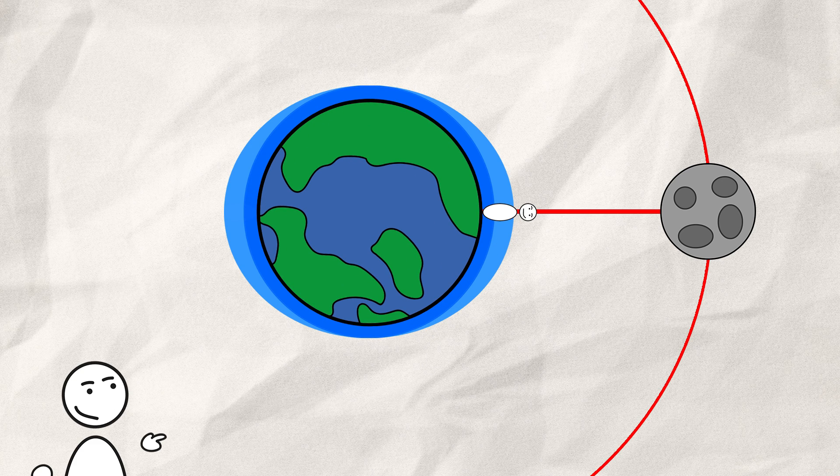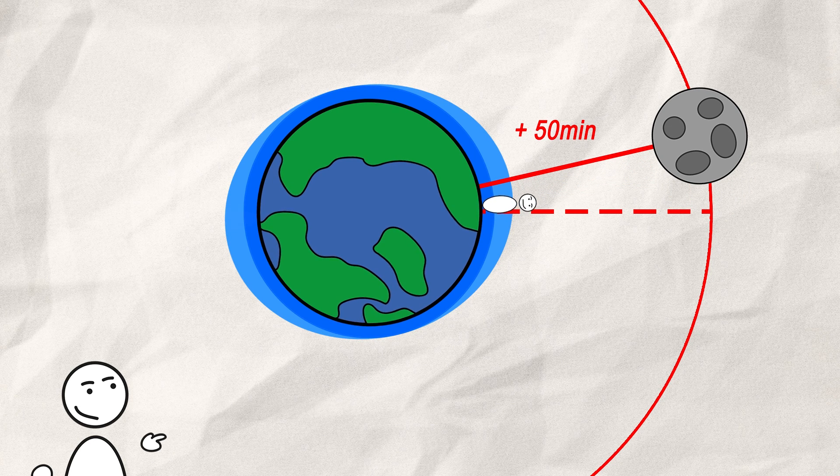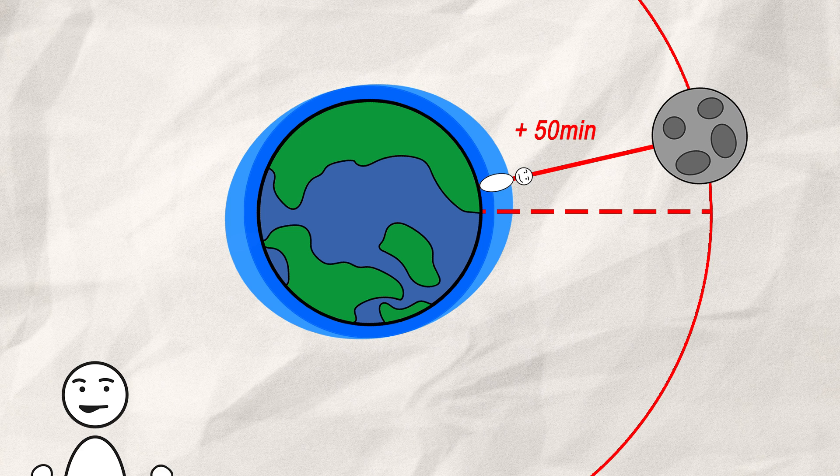We assume that our moon is fixed in the sky, but in reality, it does move a little bit. So, earth needs to rotate about 50 minutes longer before we'll be underneath the moon again. This explains why there is a daily 1 hour shift in the timetable of the tides.